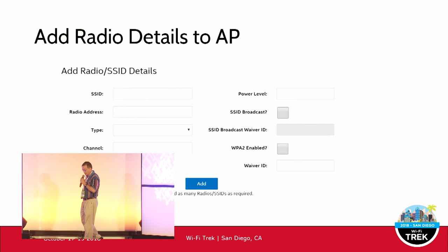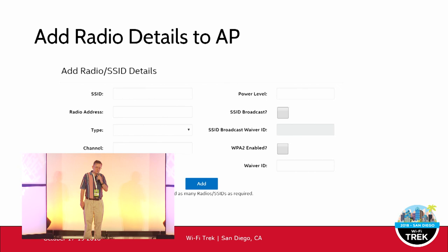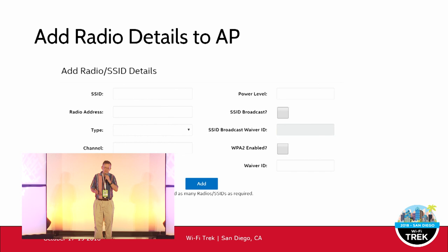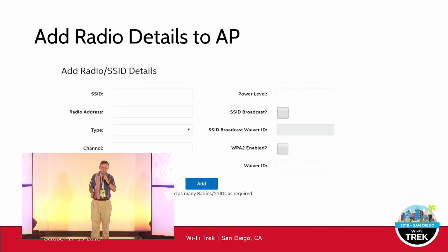We then register the radio details for the access point, including SSID and MAC address. We have requirements around WPA2 — and we'll need to update that to WPA3. Some people say they can't turn it on because they're doing a test or need to simulate a certain condition. In those cases, we allow waivers, but they must provide a good reason and a waiver ID for something that has been reviewed.